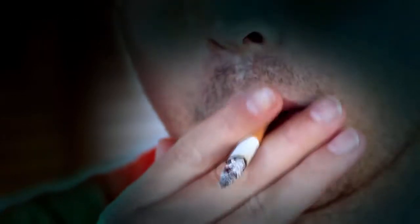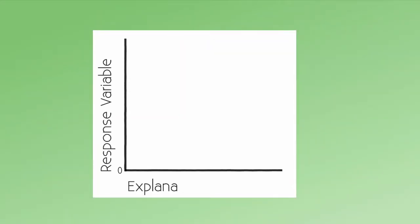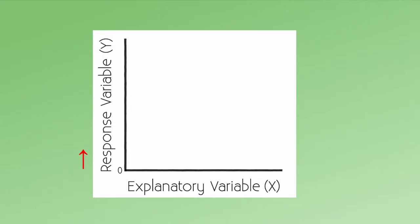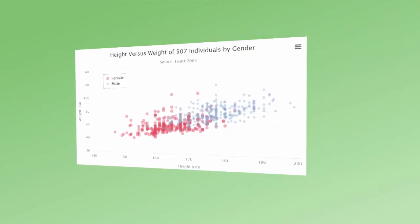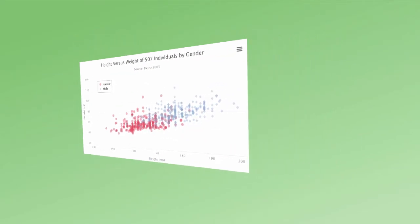How do we examine the association between two variables graphically? When we graph the association between two variables, the independent or explanatory variable is plotted on the x-axis, and the dependent or response variable is plotted on the y-axis. This is a most important convention to use when graphing relationships. However, before we actually construct our graph, there are a few questions we need to ask about the types of explanatory and response variables that we'll be working with.